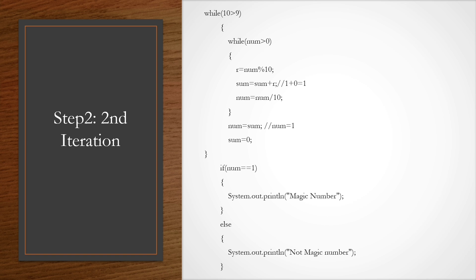A magic number is basically a number where, if we do the summation through recurring iterations of the digits and we get 1, then it is called a magic number. But if the number doesn't turn out to be 1, then that number is not a magic number.